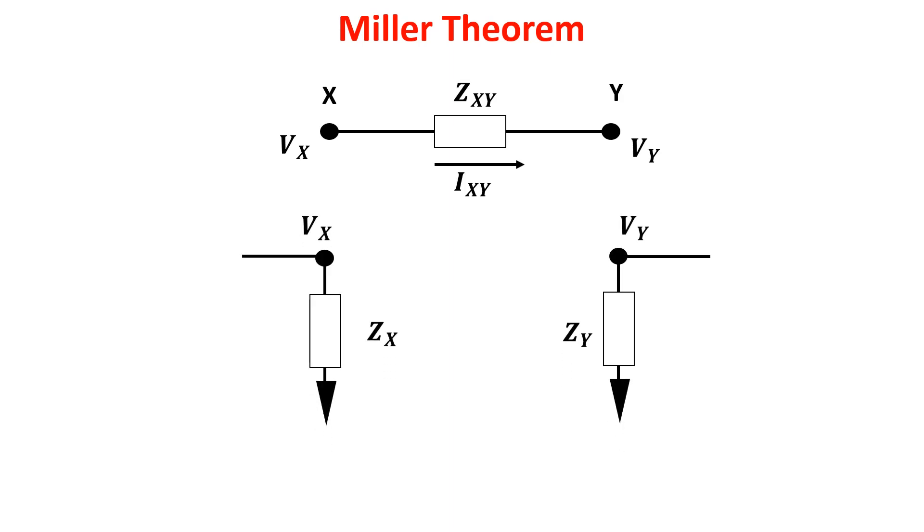So this is an equivalent circuit but with grounded elements. To be equivalent, we need to see the same voltage and current seen before from point X and Y.